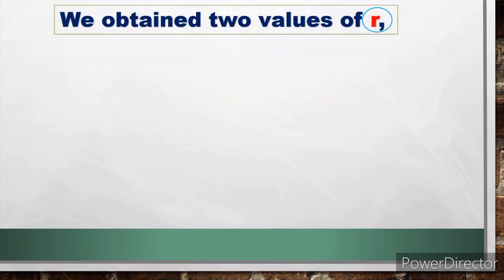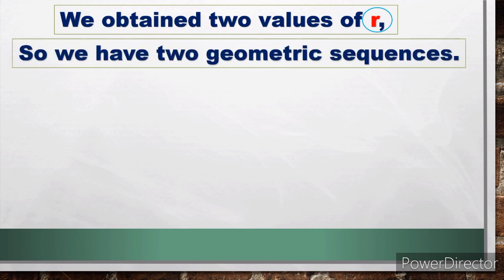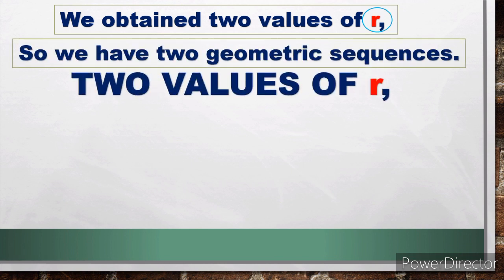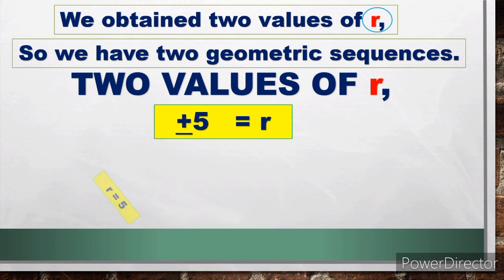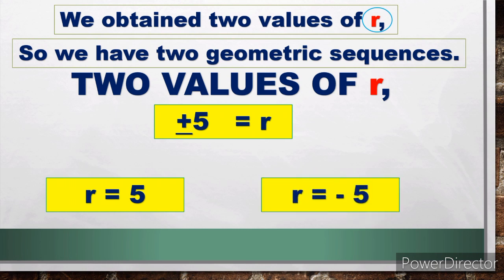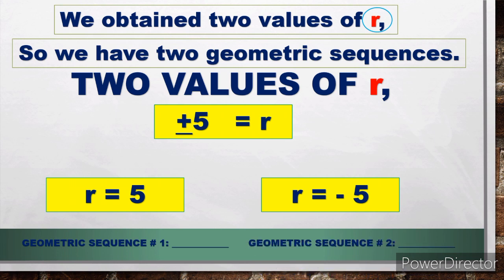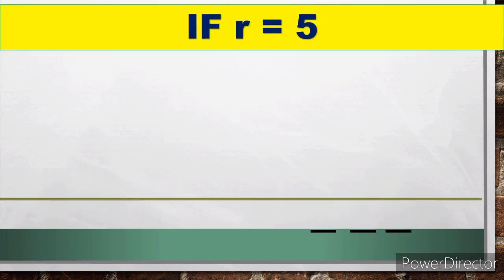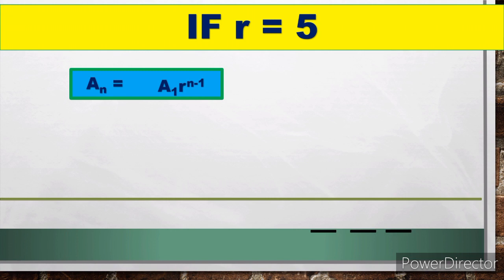We obtain two values of r: r = 5 and r = −5. This means we will have two possible geometric sequences to consider — Geometric Sequence 1 (r = 5) and Geometric Sequence 2 (r = −5).